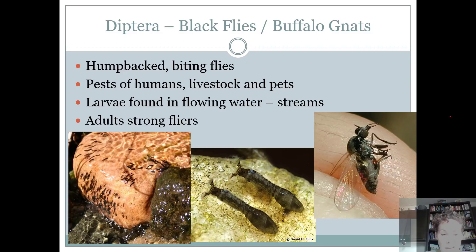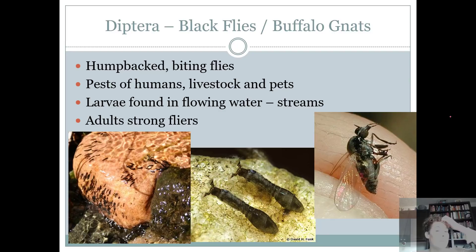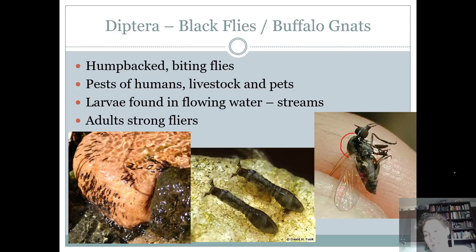Buffalo gnats are a gross type of fly. It's a biting fly, so it's a pest. They will bite humans, livestock, and pets. The larvae are found in flowing streams, making them an indicator of fairly good, highly oxygenated water. The adults are super strong flyers, so when they emerge they can fly long distances to bother people. To me they're a boring small fly that has a humped back — that's how I would identify them.